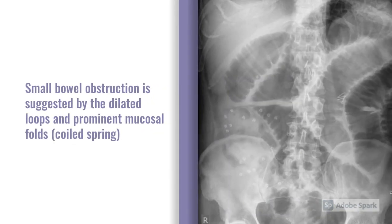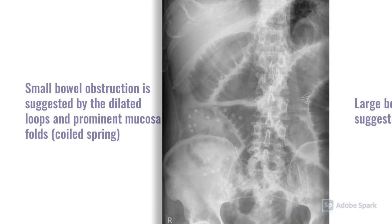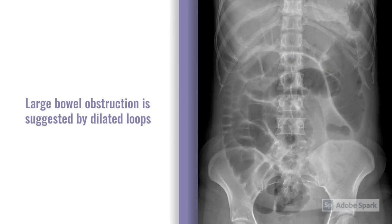The image shows an example of a small bowel obstruction, suggested by the dilated loops and the prominent mucosal folds, often described as a coiled spring type appearance. Even though those loops are dilated, they're not as wide as the large bowel loops — that's how we can say it's a small bowel obstruction. In the next example, we see a large bowel obstruction, again suggested by dilated loops — and we know it's large bowel because of its location and because of the size.